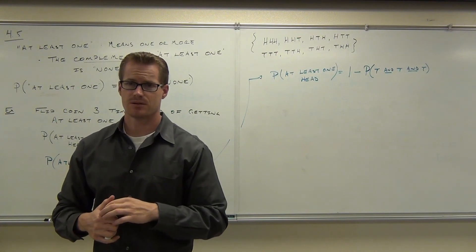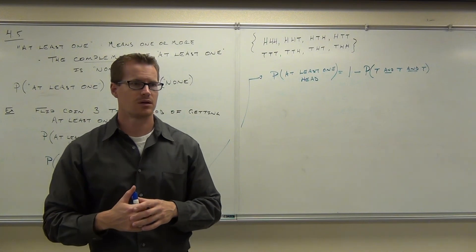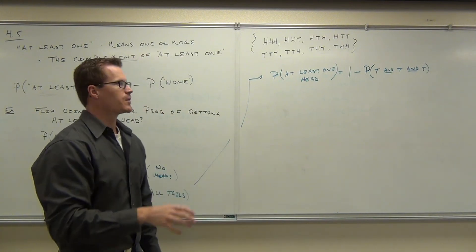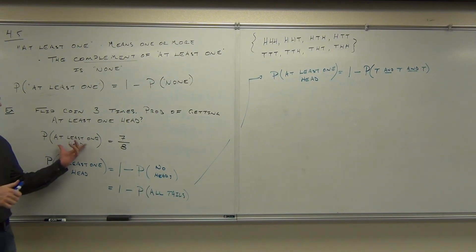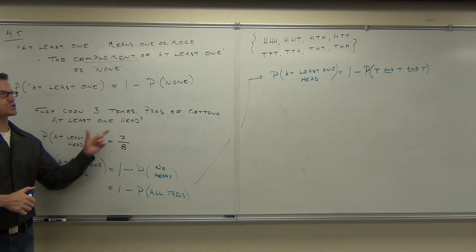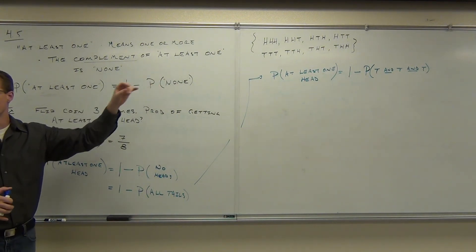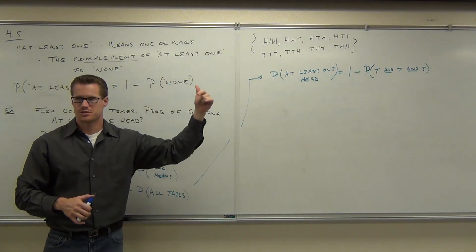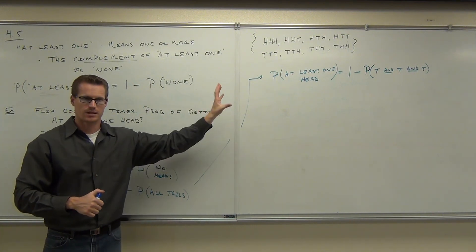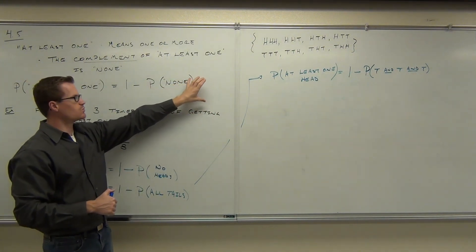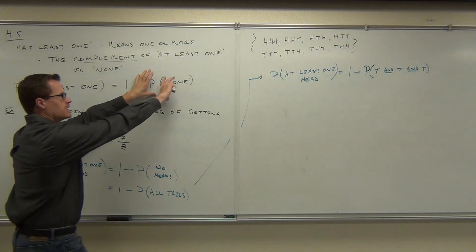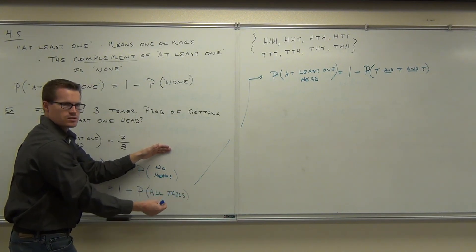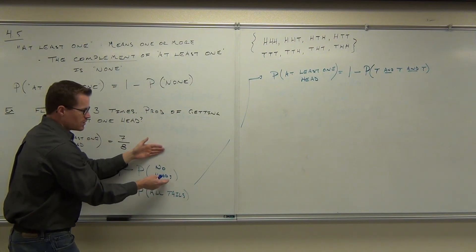The question is: are these things independent? Is flipping a coin independent or dependent? Does flipping the first tail affect the outcome of the second? Not one bit. So, to recap: can you do the probability of 'at least one' directly? Yes — draw the sample space, or do the 'or' probability for one or two or three heads. Or you can use the complement: the complement of 'at least one' is none. No heads means all tails. You just find the probability of getting no heads, then subtract from one.